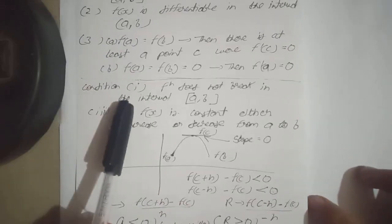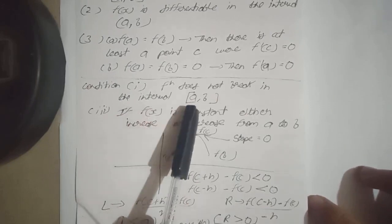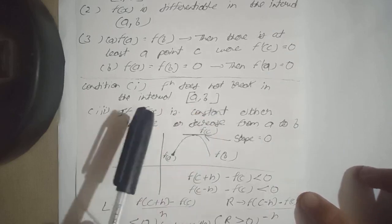So condition first kya explain kar rahi hai? Function does not break in the interval [a,b]. Function a se leekar b tak kahi par bhi break nahi ho raha hai kyunki woh continuous hai.